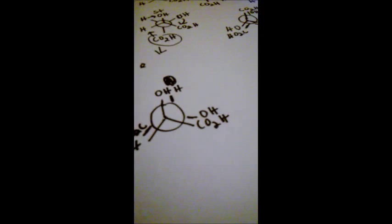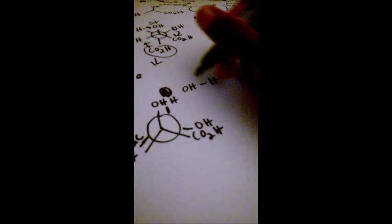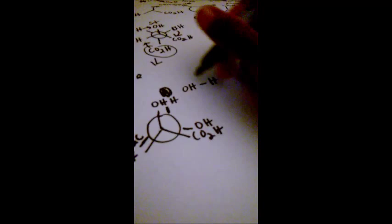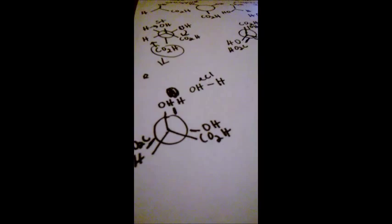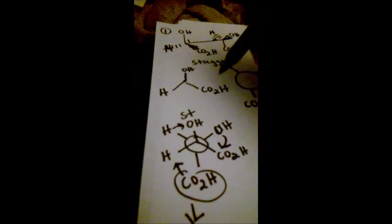If you're given a chart to calculate total energy, you would look for an OH eclipsed interaction — so look for OH, CO₂H, and H eclipsed. Make sure it says 'eclipsed' or you'll calculate the wrong energy. Then account for the carboxylic acid overlapping with the hydrogen. That accounts for the total energy, because substituents on the same carbon don't interact with each other in that way.